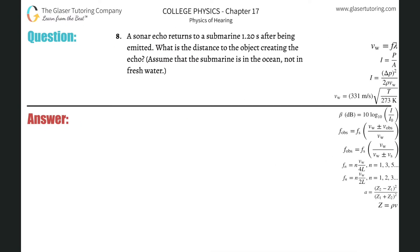Number eight: A sonar echo returns to a submarine 1.2 seconds after being emitted. What is the distance to the object creating the echo? Assume the submarine is in the ocean and not in fresh water. Okay, so basically with this assumption, when they're telling us to assume this, you've got to look it up in the text—the speed